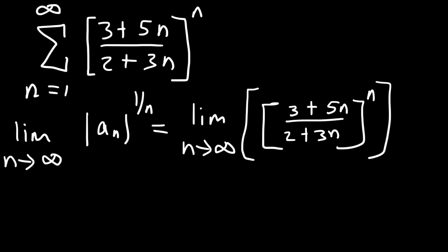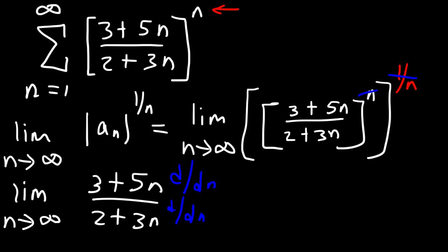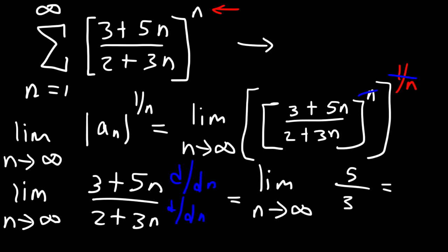The best time to use the root test is when you have a series raised to the nth power, because raising it to the 1 over n causes the exponents to cancel. So we're left with the limit as n goes to infinity of (3 plus 5n) divided by (2 plus 3n). Applying L'Hôpital's rule, the derivative of 3 plus 5n is 5 and the derivative of 2 plus 3n is 3. So the result is 5 over 3, which is greater than 1, meaning the series diverges.